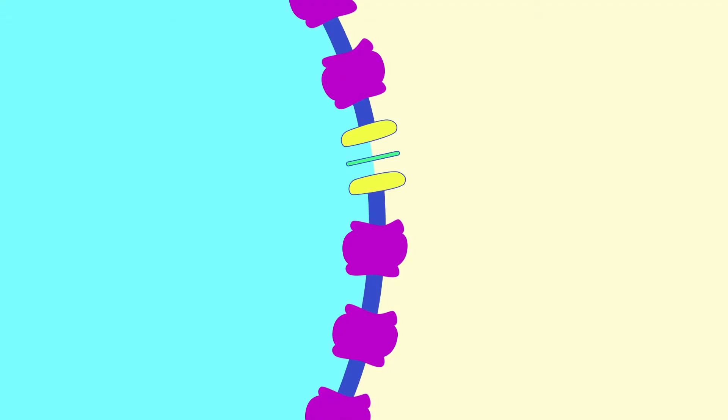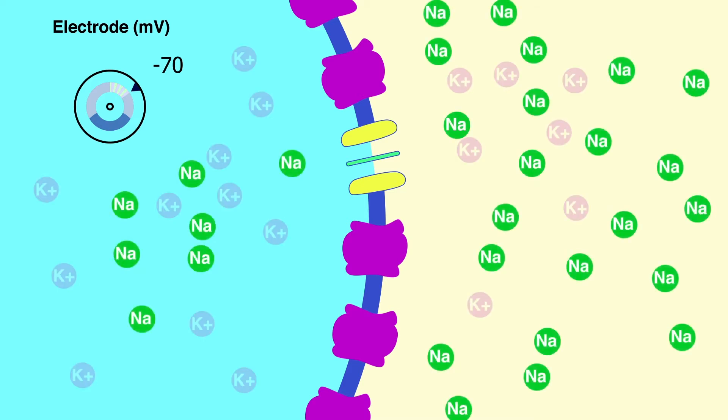If you place an electrode in the axoplasm of a resting peripheral nerve cell, you'll see that the voltage inside the axoplasm is about negative 70 millivolts to negative 90 millivolts less than the outside of the cell. This electrical potential is created primarily by the differences in the concentrations of sodium and potassium on either side of the cell membrane.